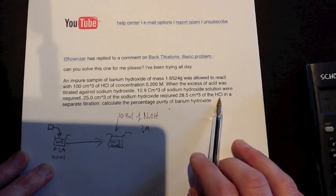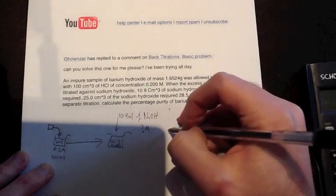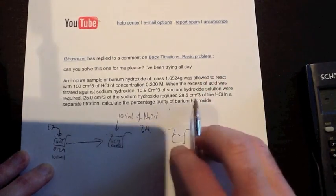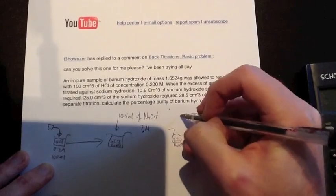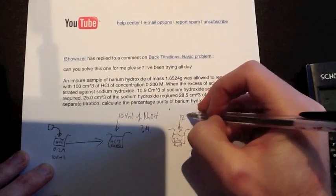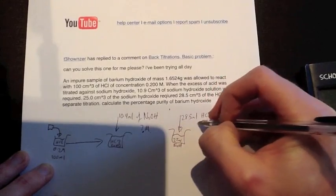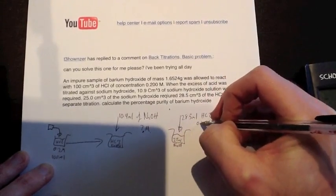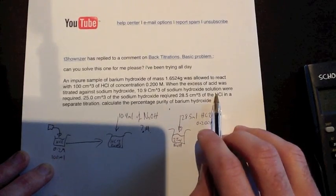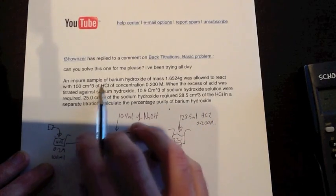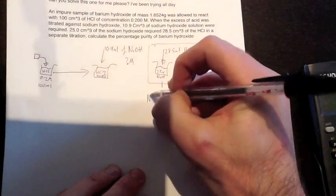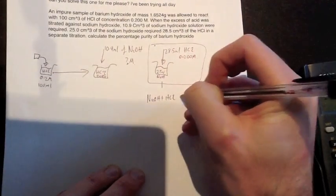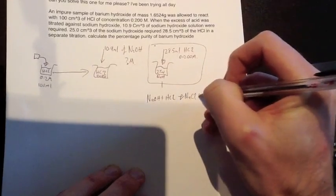So in a separate one, we know that 25 mL of NaOH has been titrated with 28.5 mL of HCl at 0.200 molar. And because it says the hydrochloric acid, we know it means this hydrochloric acid up here. So first of all, what we're going to deal with is this one here. So I'll just quickly find out, we've got NaOH plus HCl goes to NaCl plus H2O. Okay, 1 to 1 ratio.